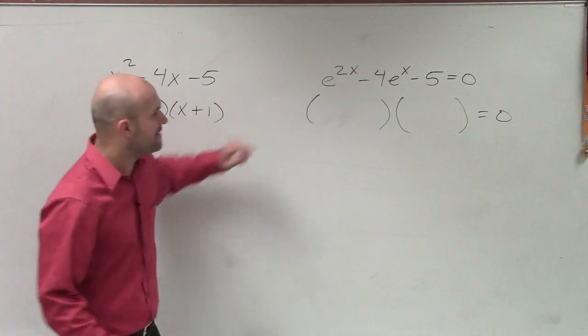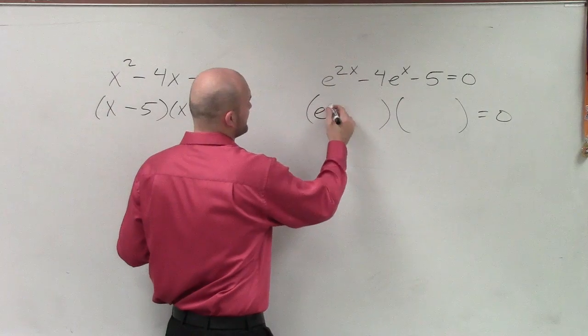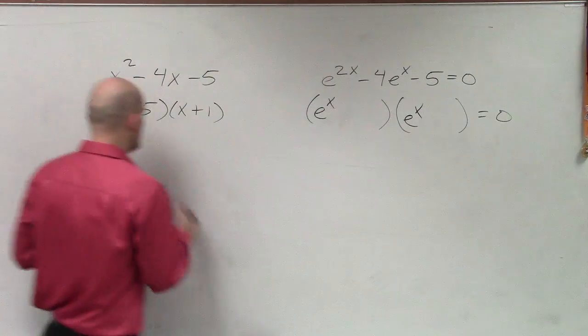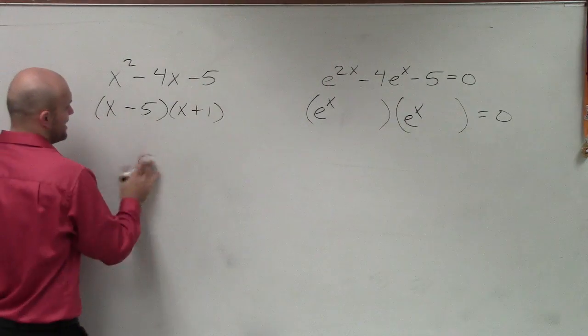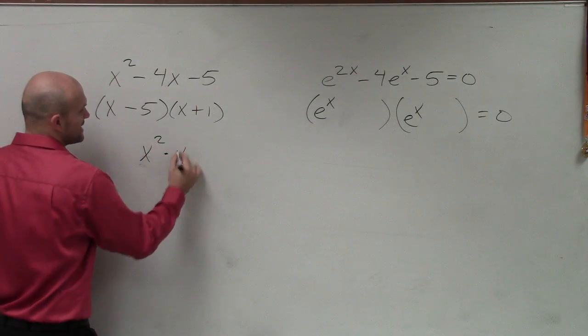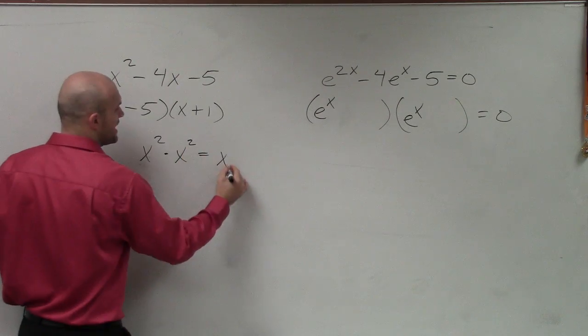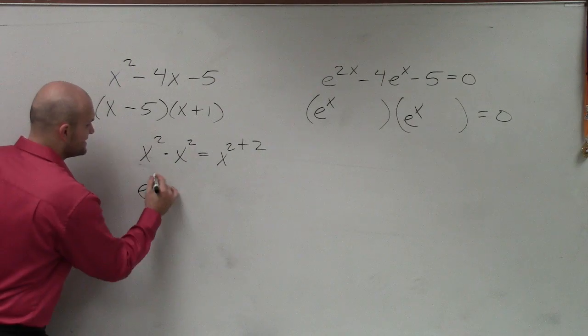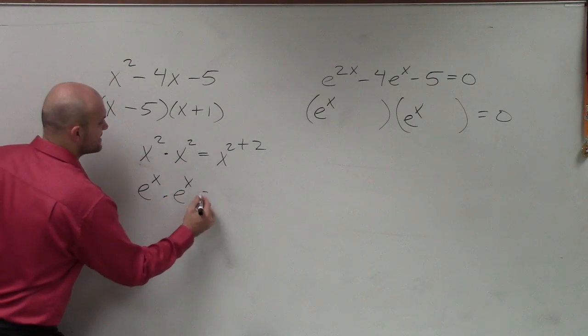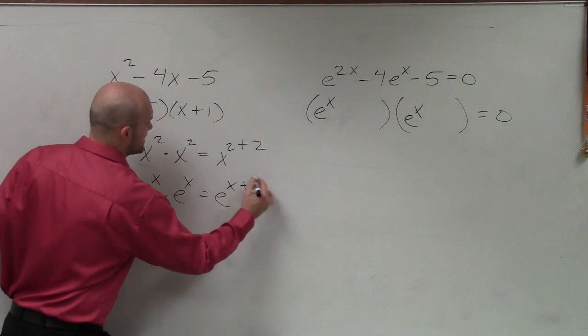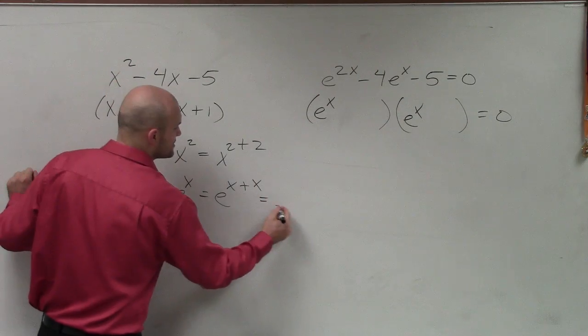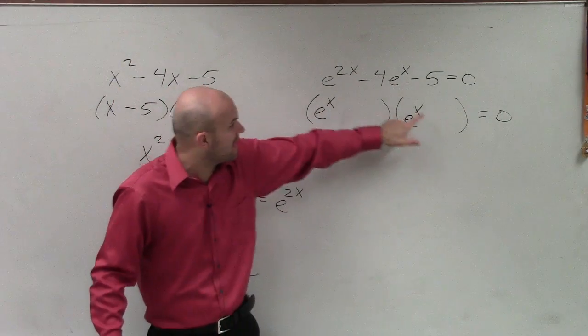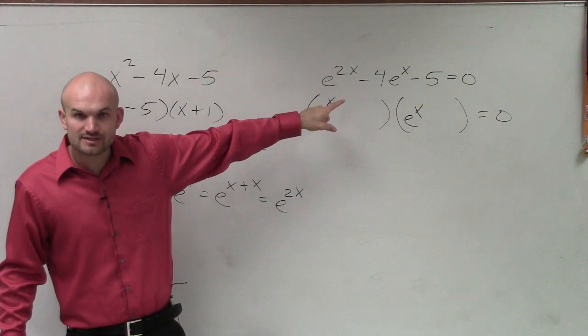So let's go and look at it. What would I have to have? If I had e to the x times e to the x. Well, what is e? Remember, if I have x squared times x squared, that equals 2x times 2 plus 2. Right? So if I did e to the x times e to the x, that equals e to the x plus x, which equals e to the 2x. So yes, actually multiplying e to the x times e to the x gives me e to the 2x.